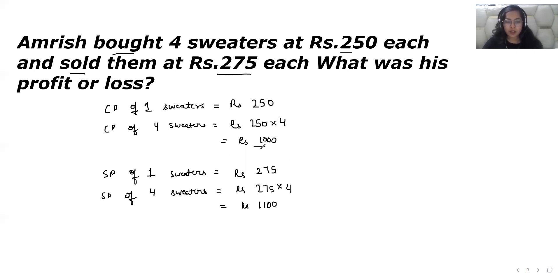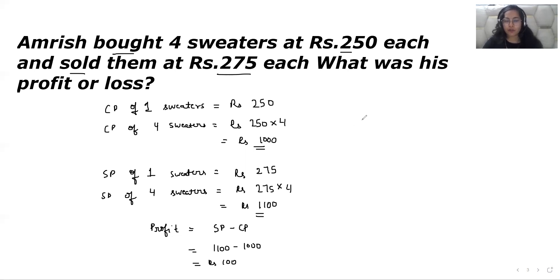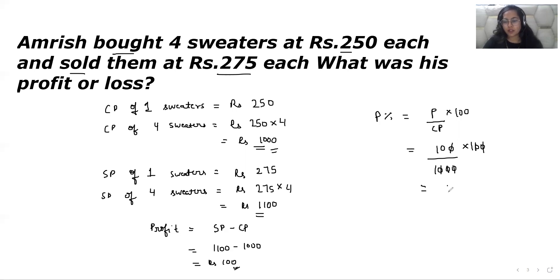Now we have the cost price and the selling price. We notice the selling price is greater than the cost price, which means profit. The formula for profit is SP minus CP: Rs.1,100 minus Rs.1,000 equals Rs.100. Now for profit percent: profit over CP multiplied by 100 — that is 100 over 1,000 multiplied by 100. After eliminating zeros, we get 10. So the profit percent is 10 percent.